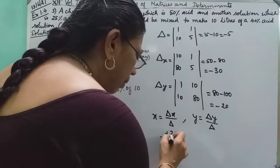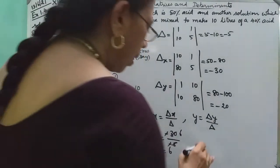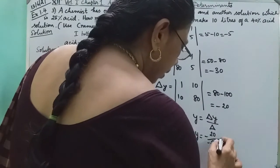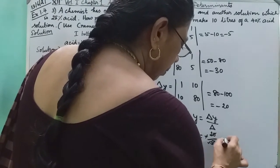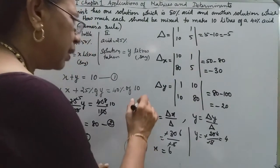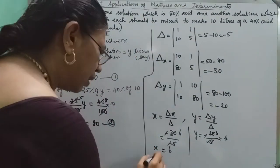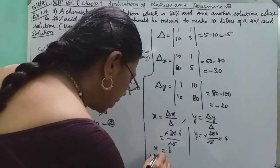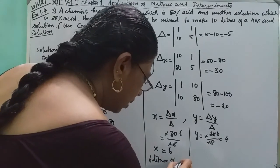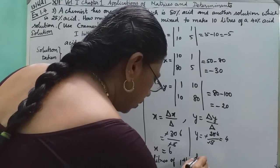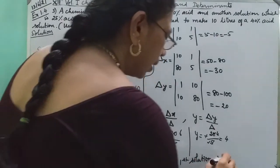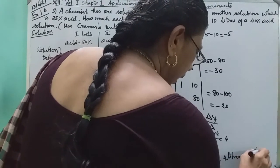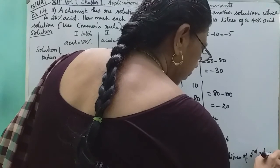So, if you solve the answer, X is equal to delta X by delta and Y is equal to delta Y by delta. Delta X is minus 30 over minus 5, which gives X equal to 6. Y is equal to minus 25 over minus 5, which gives Y equal to 4 liters. So, 6 liters of the first solution and 4 liters of the second solution are mixed.